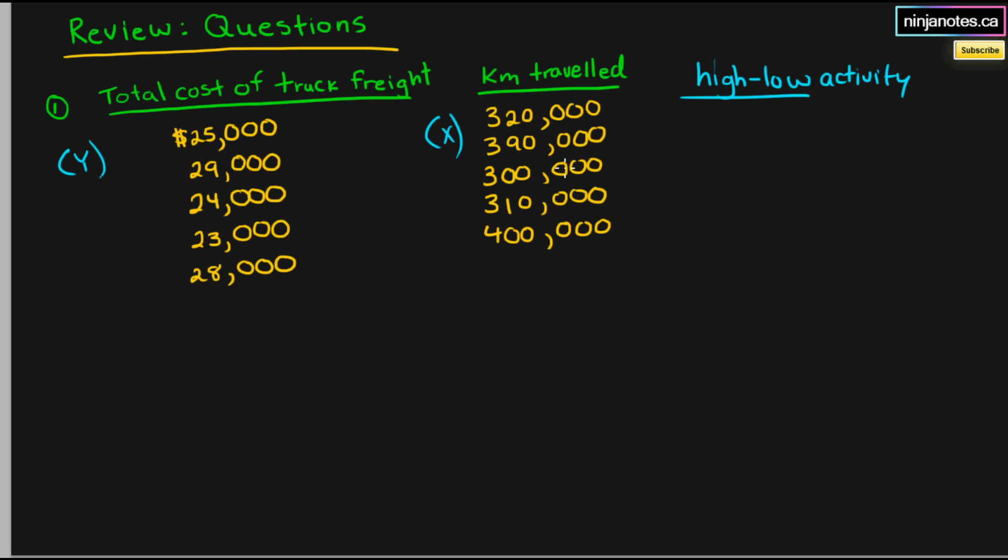So let's find our high points. Our high point is here. That is our high point. And our low point is right here, which is 300,000. And your respective y values are 24,000 and 28,000.